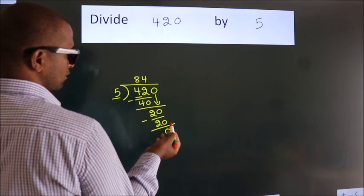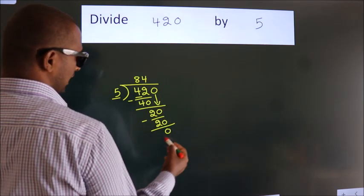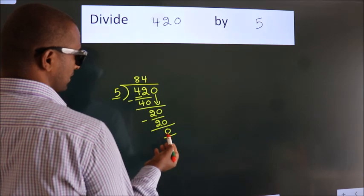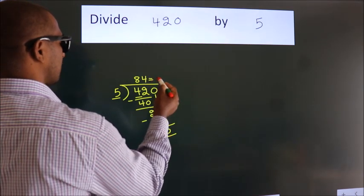After this, no more numbers to bring down, and we got remainder 0. So this is our quotient.